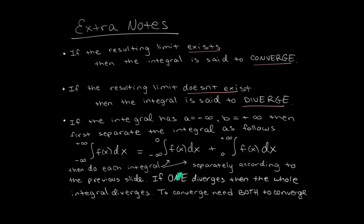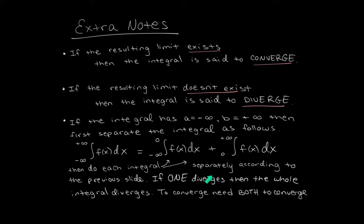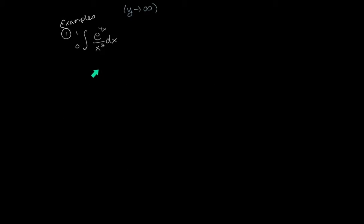We have a rule that if either one of these integrals diverges, then the total integral is said to also diverge. In other words, if the whole thing is going to converge, then both of these things had better converge. If one of them diverges, then the whole thing diverges.